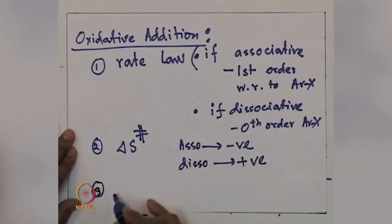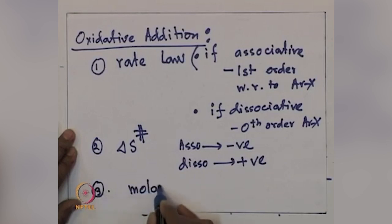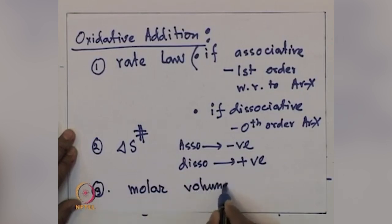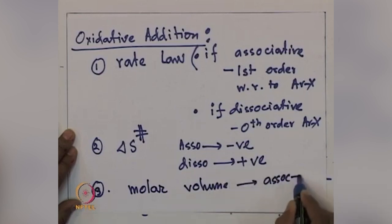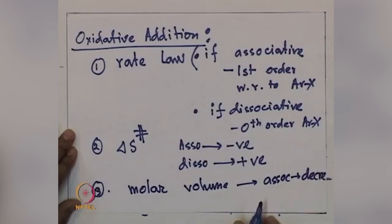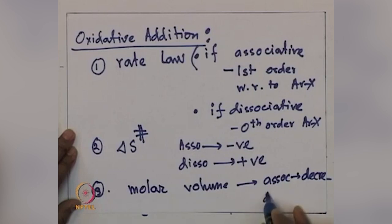Most importantly, your molar volume — in the case of associative, it will be decreasing, and in the case of dissociative, it will be increasing.